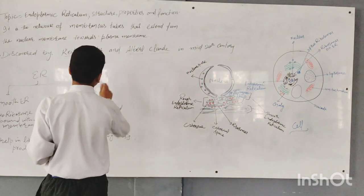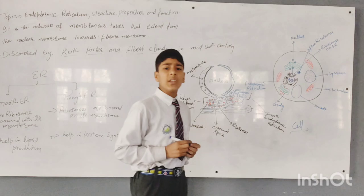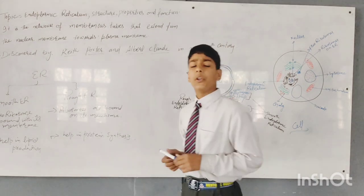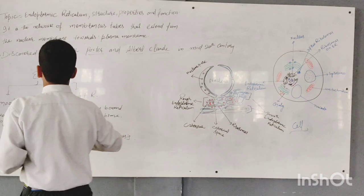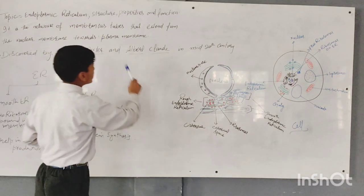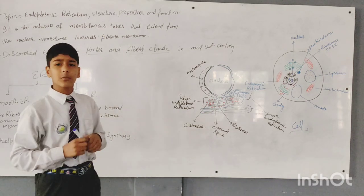It was discovered by Porter and other scientists. It consists of small tubular structures that are dispersed in the cytoplasm. It is a network of membranous tubes that extend from the nuclear membrane to plasma membrane.